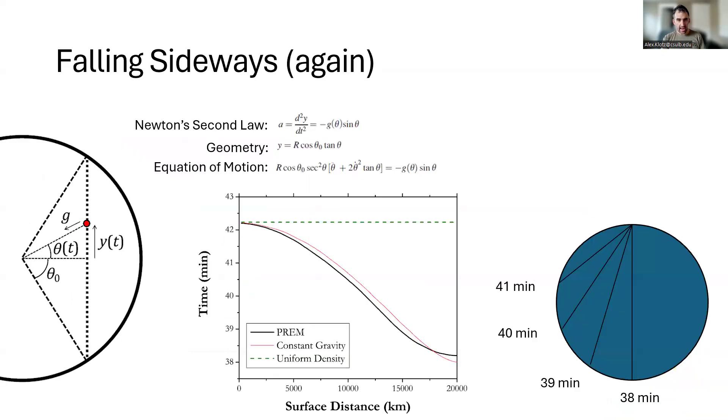We can also look at the sideways tunnels. And it's no longer 42 minutes to any point on the earth. You can't really do this with a pencil and paper. It's a bit more complicated, but you can show that it interpolates from 42 minutes for short trips to 38 minutes for long trips. And again, the constant gravity model approximates the PREM solution really well.